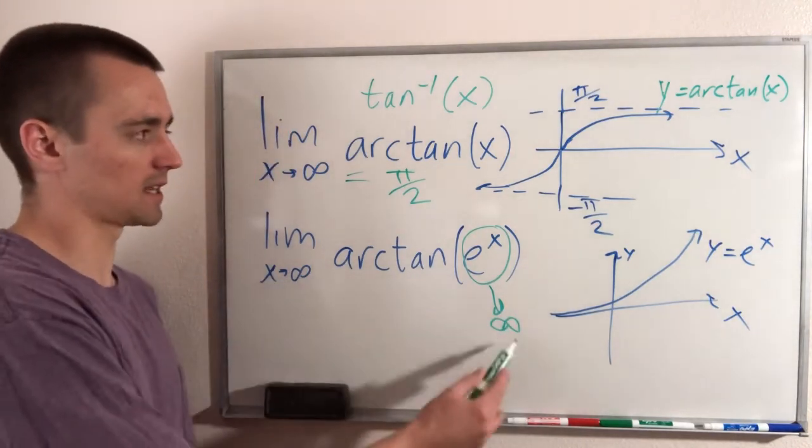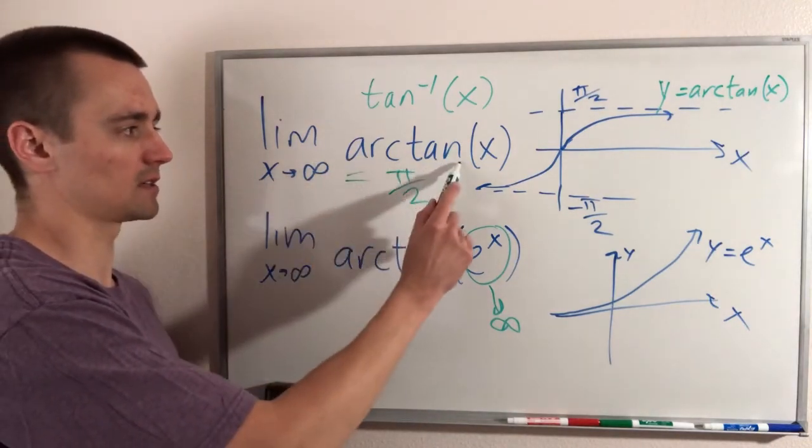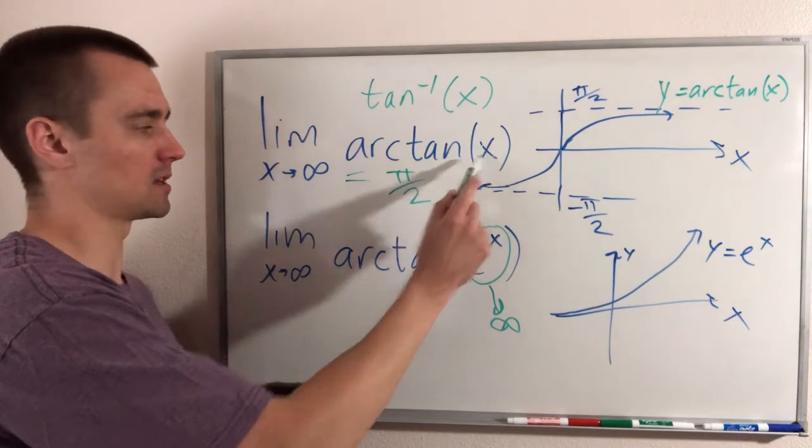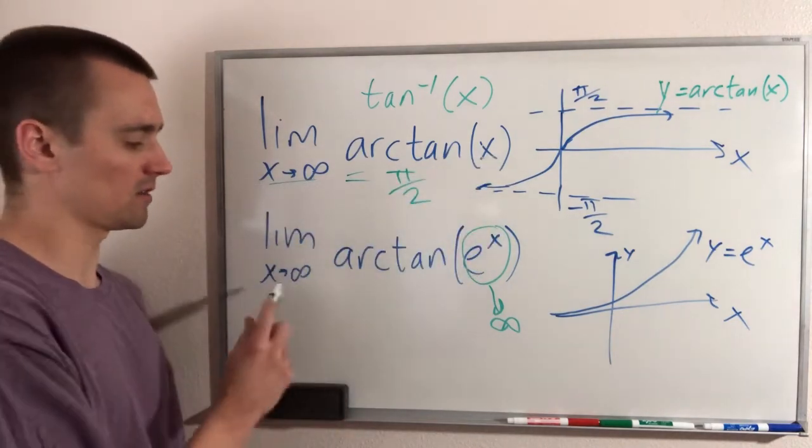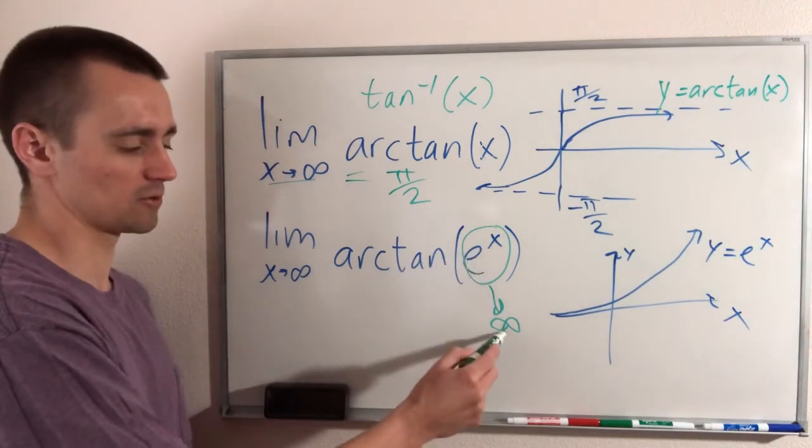So effectively this ends up being the same as what we had up here. Because we had arctan as what's being plugged in is going to infinity. Well, that's the same thing we have down here. Arctan of some piece going to infinity.